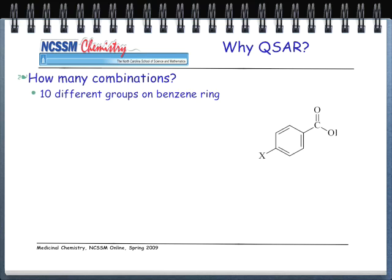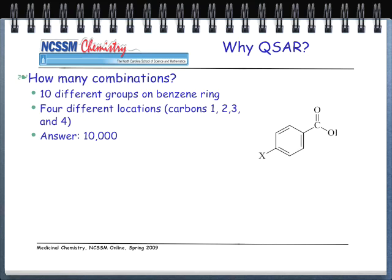Let's assume we have 10 different groups that we're putting on that benzene ring — 10 different types of compounds that could represent X. And we can put all those X's at four different locations: carbons one, two, three, and four. The answer would be there are about 10,000 different combinations of compounds that could come out of this very small example. That's an awful lot of compounds that we would have to make or synthesize in the lab and then test on animals or other organisms.